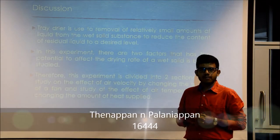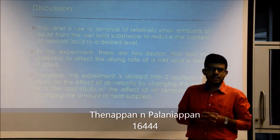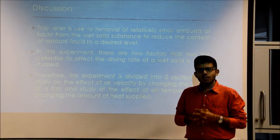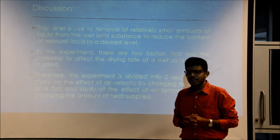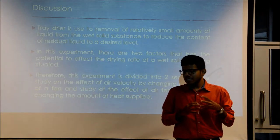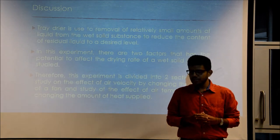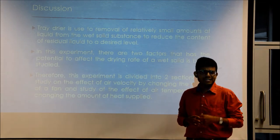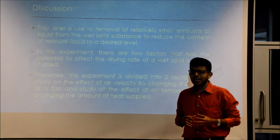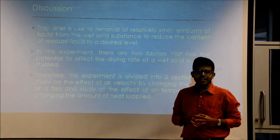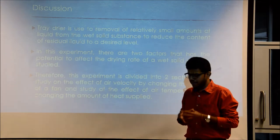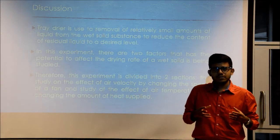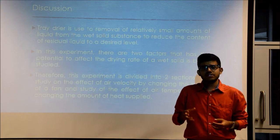The discussion for this experiment covers various factors and effects. The main apparatus is a tray dryer, which is used to remove a relatively small amount of liquid from wet solid substances and reduce the residual liquid content to a desired level. There are two factors that affect the experiment: changes in air velocity and changes in air temperature. The experiment is therefore divided into two parts, Part A and Part B.